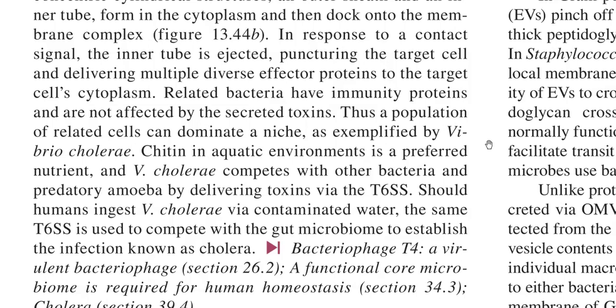A clear example is Vibrio cholerae: chitin in the aquatic environment is a preferred nutrient, but Vibrio cholerae also competes with other bacteria and predatory amoeba. By delivering toxins via the Type 6 secretion system, it can kill competing bacteria and even amoeba, gaining an ecological advantage. Similarly, when Vibrio cholerae is ingested from contaminated water, the same T6 secretory system injects toxins inside the host to compete with the gut microbiome, establishing the pathogen and causing cholera.